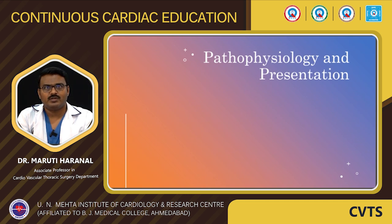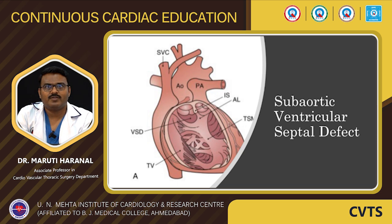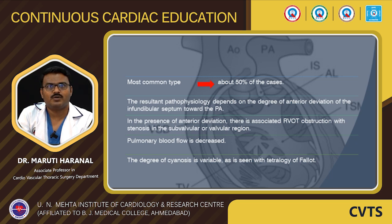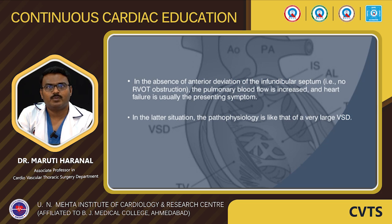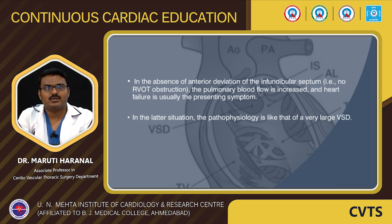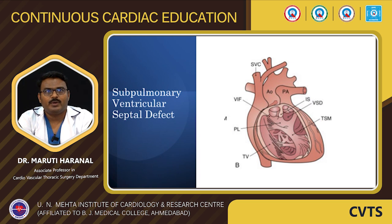Coming to pathophysiology and presentation: those with subaortic VSD — the most common type, representing around 50% of cases — the resultant pathology depends on the degree of anterior deviation of the infundibular septum towards the pulmonary artery. In the presence of anterior deviation there is associated right ventricular outflow tract obstruction with stenosis in the subvalvar or valvar region, and pulmonary blood flow is decreased, with variable cyanosis as seen in Tetralogy of Fallot. In the absence of anterior deviation of the infundibular septum, pulmonary blood flow is increased and heart failure is usually the presenting symptom, with pathophysiology more like that of a large VSD.